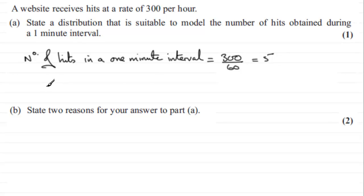So therefore the answer, in my opinion, is going to be a Poisson distribution with a mean of five, rather than just Poisson. But there you go, that's just my opinion.